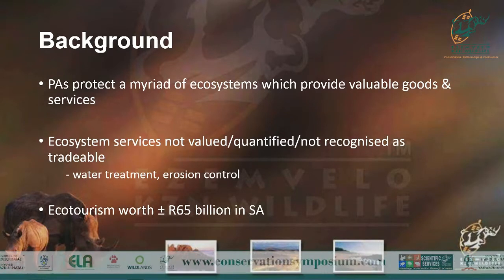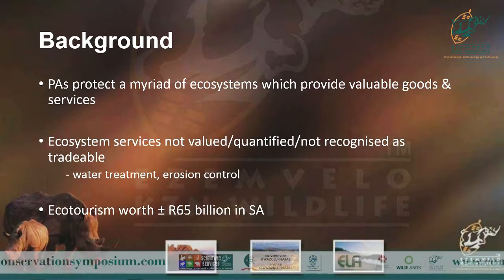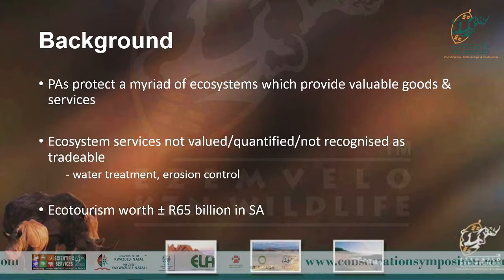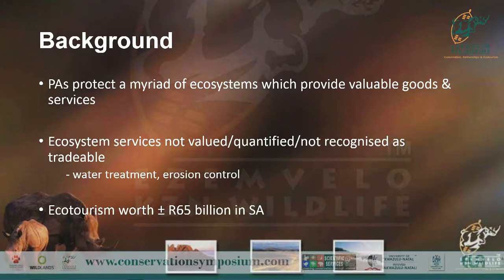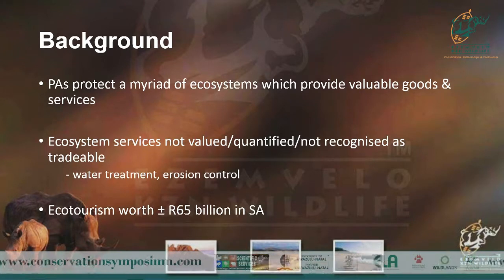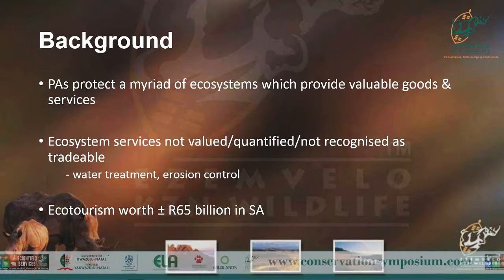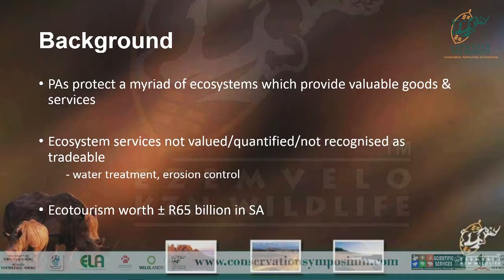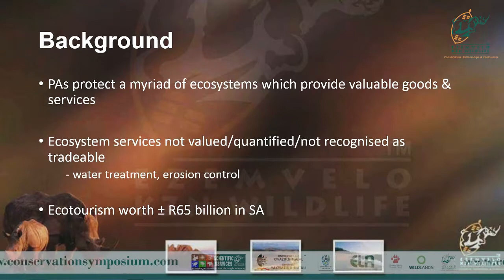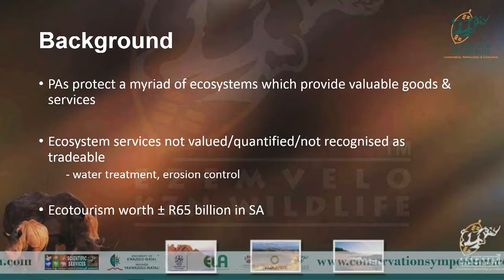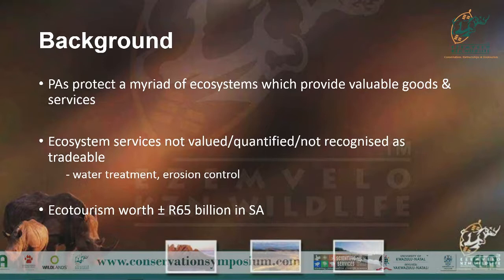The problem becomes that these ecosystem services are not marketable — they're not tangible. For instance, if we talk about regulatory or support ecosystem services such as water treatment and erosion control, we can't really put that into a bottle and say we're selling water treatment or erosion control. So we don't get much buy-in.